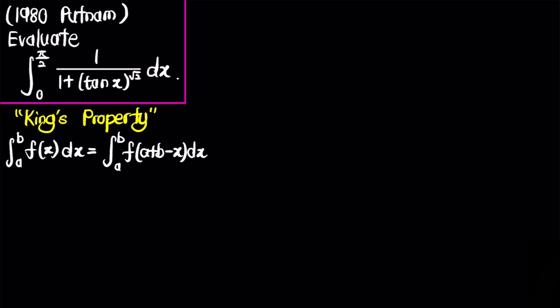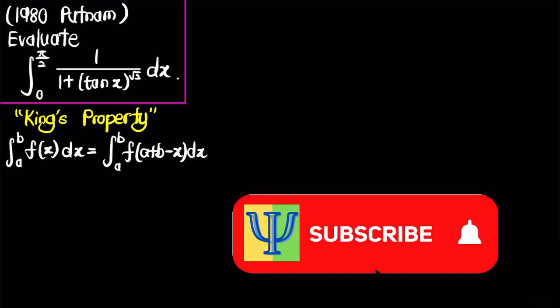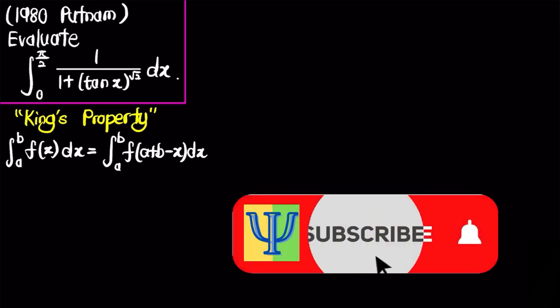Let's solve a 1980 integral from the Putnam exam, where we'll evaluate the integral from 0 to π/2 of the function 1 over 1 plus tangent x to the power of square root of 2, with respect to dx.